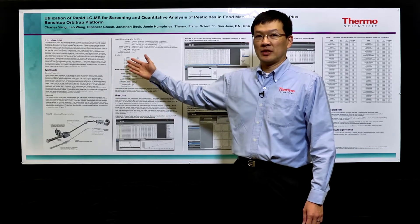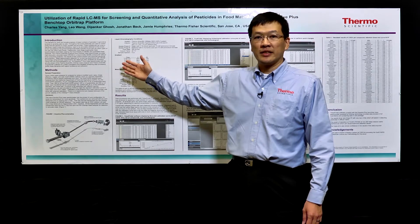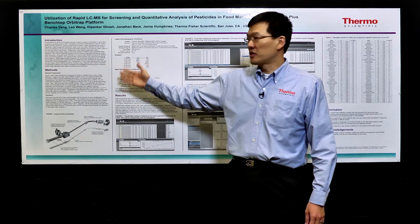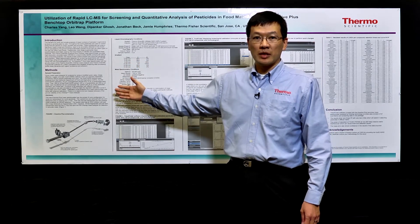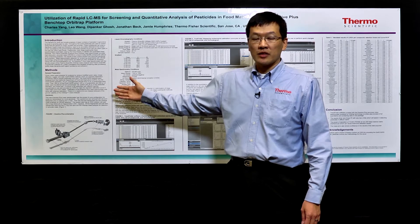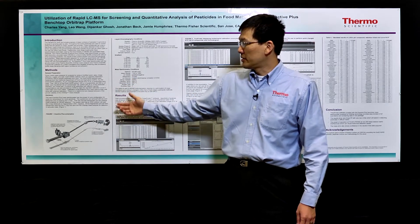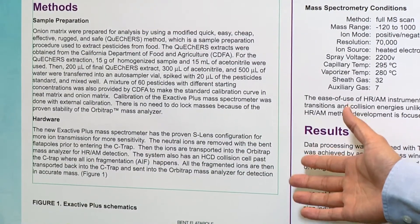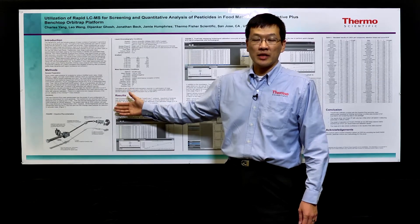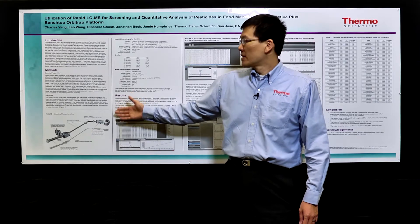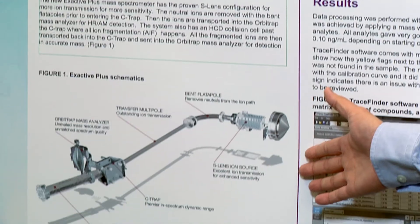We describe what the poster is about — we have instrumentation that can scan fast enough for UHPLC-type work. The sample prep is done by QuEChERS, which is a technique used a lot by food safety labs right now, as well as the hardware, which is the X-Activ Plus.